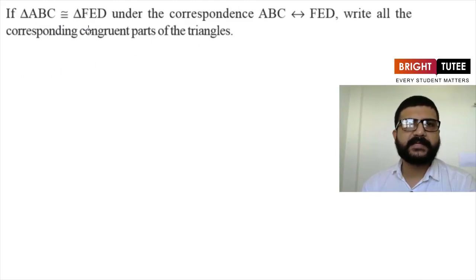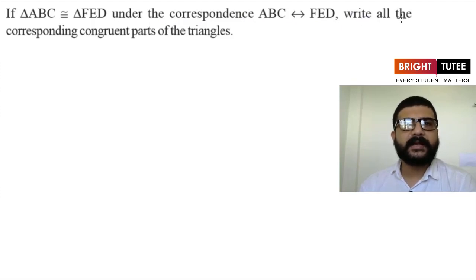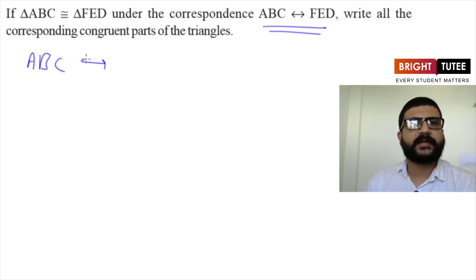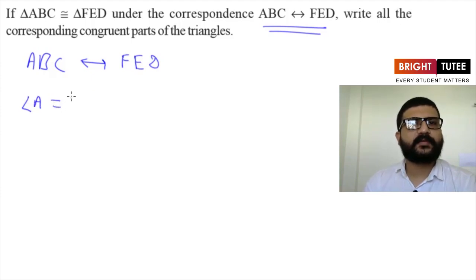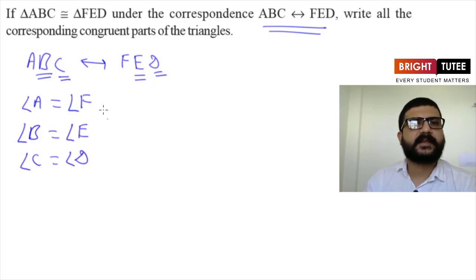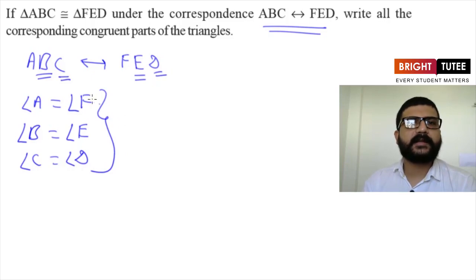The next question: if triangle ABC is congruent to triangle FED under the correspondence ABC corresponding to FED, write all the corresponding congruent parts. From the correspondence, angle A is equal to angle F, angle B is equal to angle E, and angle C is equal to angle D. These are the corresponding angles. Now we have to write the corresponding sides.